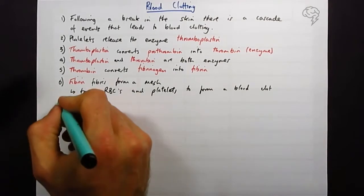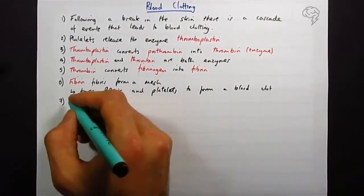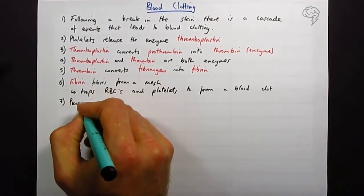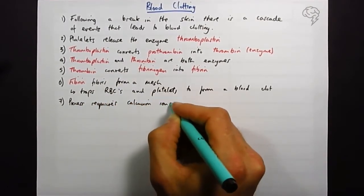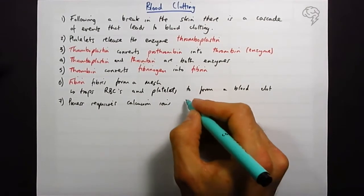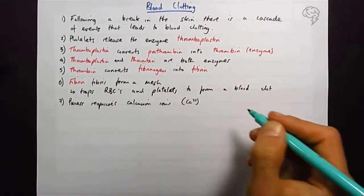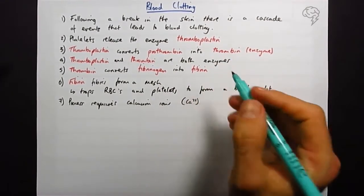For some reason they put this right at the end, I'm not too sure why, but it requires calcium ions Ca2+ or you can say vitamin K to happen. I'm going to say calcium ions to activate the thromboplastin.